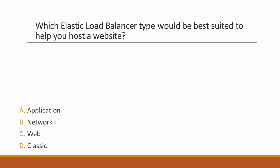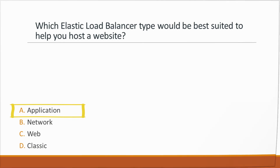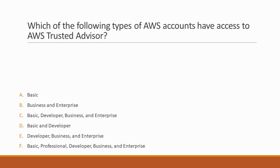Next question: Which elastic load balancer type would be best suited to help you host a website? Options: A. Application, B. Network, C. Web, D. Classic. Correct answer is option A, Application, because there is no web load balancer in AWS. Instead, the application load balancer fills this need. Classic load balancers are no longer recommended, and a network load balancer is not right for this case.